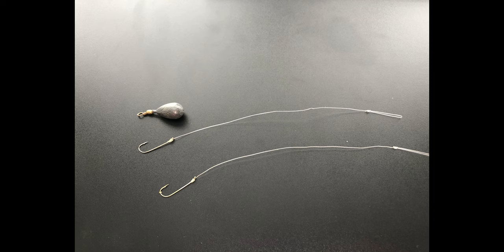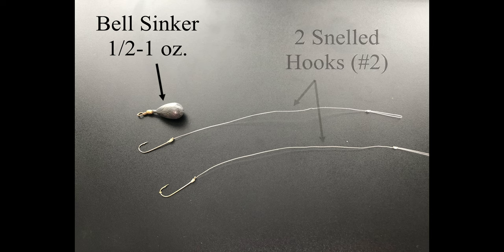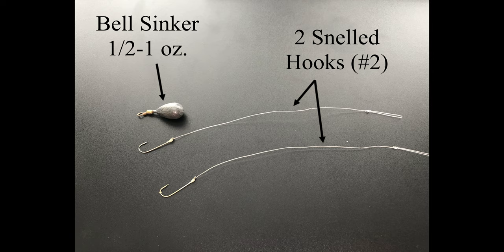There's just a couple of things you need in order to tie these up. You're going to need a bell sinker somewhere in the half to one ounce range, and then you're going to need a couple of pre-tied snell hooks that you can buy in packages at the store. Number two is the best hook size I found for perch, but you can adjust this based on the size of the perch you intend to catch.